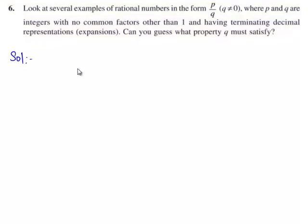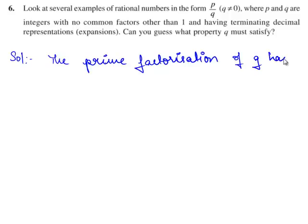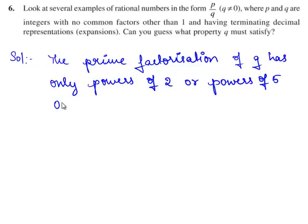The property that q must satisfy in order that the rational numbers in the form of p by q, where p and q are integers with no common factors other than 1, having terminating decimal representation, is that the prime factorization of q has only powers of 2 or powers of 5 or both.